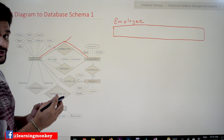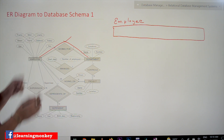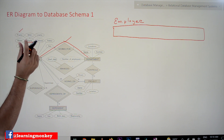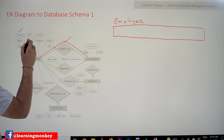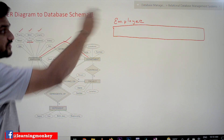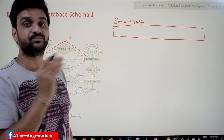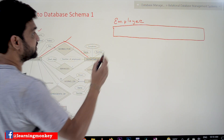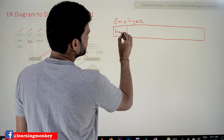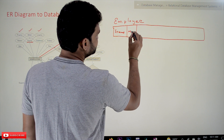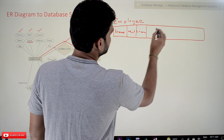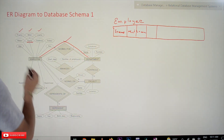If we consider the 'name' attribute, it is a composite attribute which can be further divided into Fname, Middle Initial, and Lname. So we are not going to take just 'name' — instead we take its subdivisions: Fname, Middle Initial, and Lname as the columns of the Employee relation.